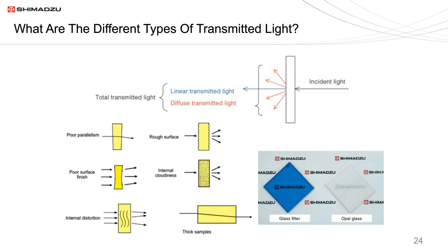All sorts of interesting things can happen when you put a solid sample into a spectrophotometer. If light passes through a transparent clear sample, you get linearly transmitted light, shown by the blue glass filter example. If scattering occurs, you get diffused transmitted light coming off at all angles — indicated by opal glass — presenting a real problem with measurement artifacts. You can also have issues if the sides aren't parallel, if you have a rough surface, internal cloudiness, internal distortions, or if your sample is long and reflects the light. This causes all sorts of artifacts when the beam strikes the detector.